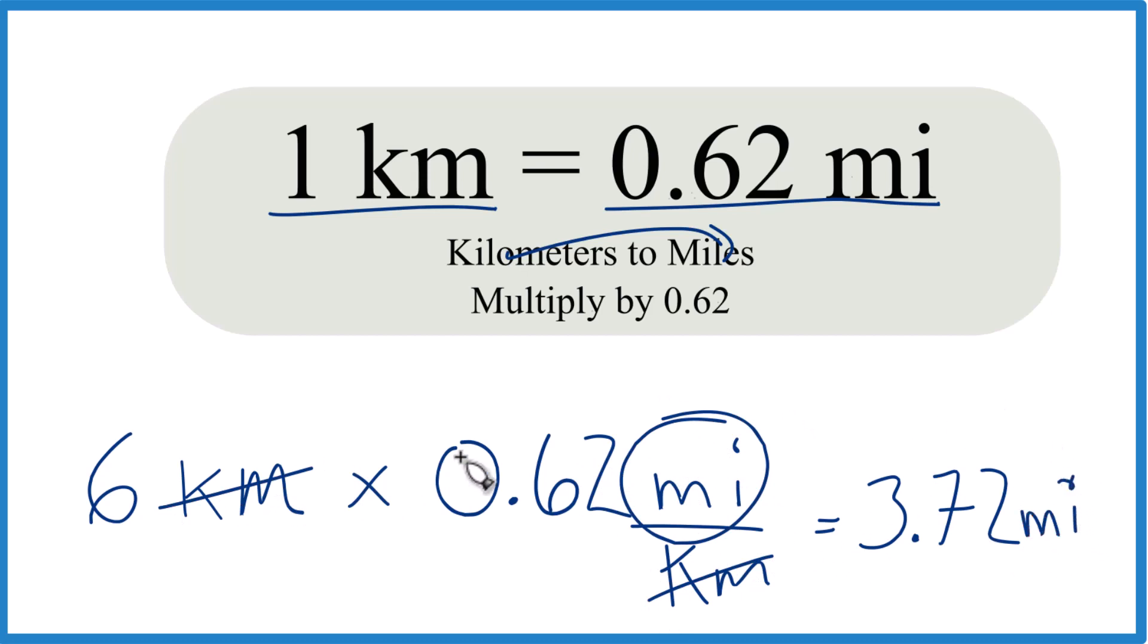In answer to our question, six kilometers, that equals 3.72 miles. If we want to go miles to kilometers, you could just take and divide by 0.62.